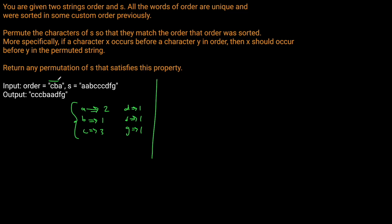We go from left to right in ORDER because that's the sorted order. We say: do we have any C's in our string? Yes, we have three of them. So we append three C's to our string builder. Then we check for B's — yes, we have one B, so we put B in. Then we're at A — we have two A's, so we add two A's to our string builder. Now you'll notice we've processed our ORDER string but still haven't arranged D, F, and G.